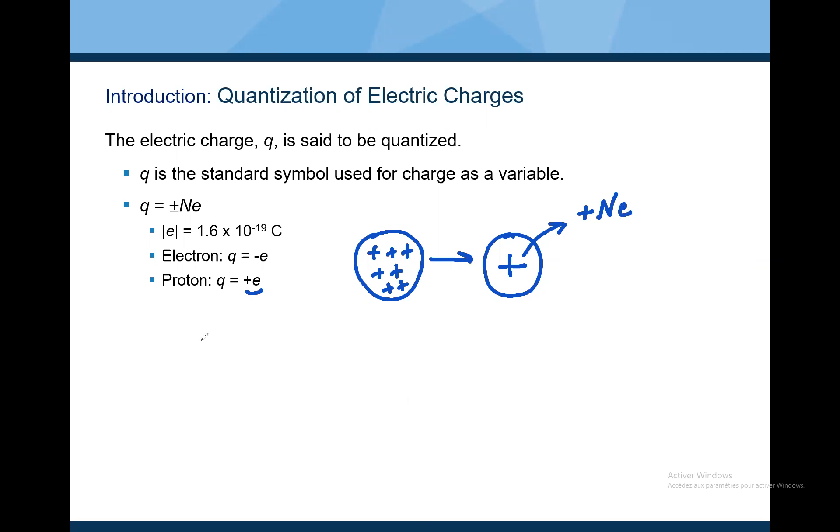So we have N plus E. We have N protons. The same for an object which has a lot of negative charges. We can say this object is negatively charged. And inside we have N electrons. And the electrons, or one electron, is identified by minus E. So we have minus NE. We have N electrons. E equals 1.6 times 10 to the minus 19.